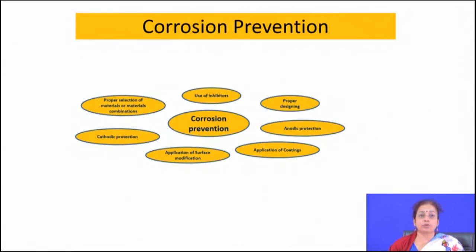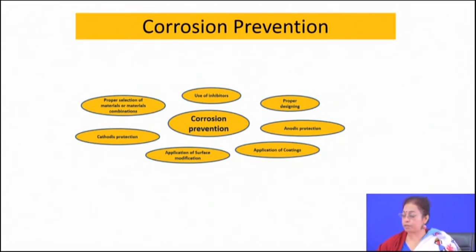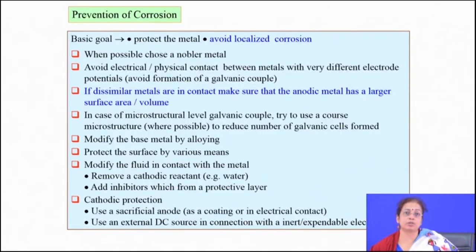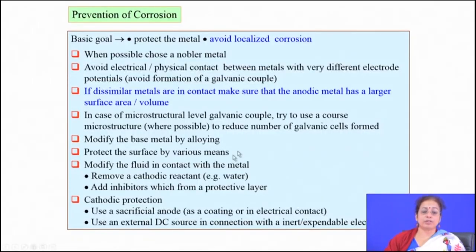You have to understand which kind of corrosion your component is facing in that particular environment, and accordingly choose the material and take different precautionary measures so that corrosion can be minimized. This summary sheet's basic goal is to protect the material from corrosion and avoid localized corrosion.